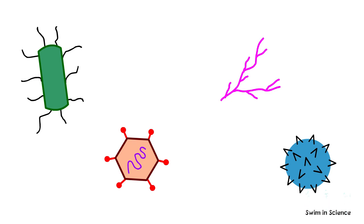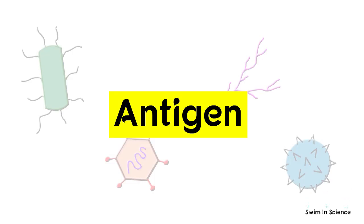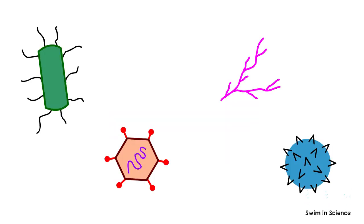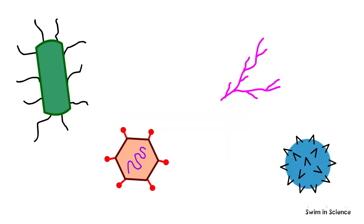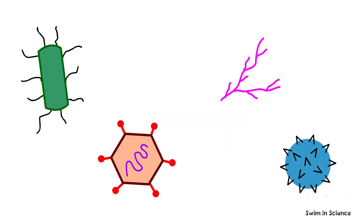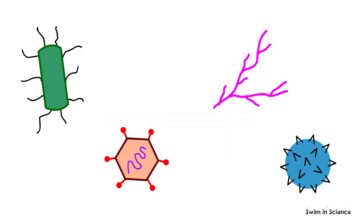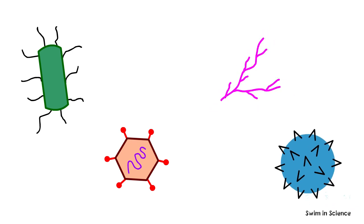Any substance that is foreign to the body and has the ability to induce an immune response is known as an antigen. An antigen may be a bacteria, a virus, a fungus, or a pollen grain.